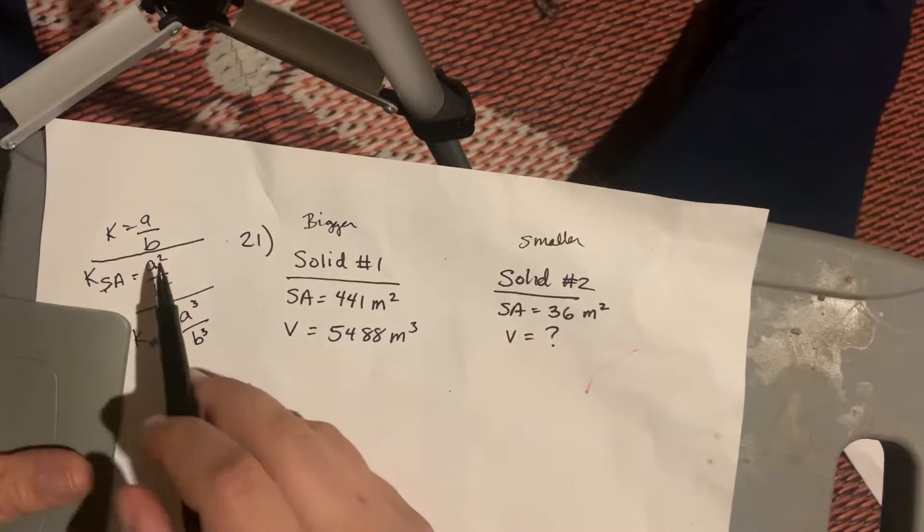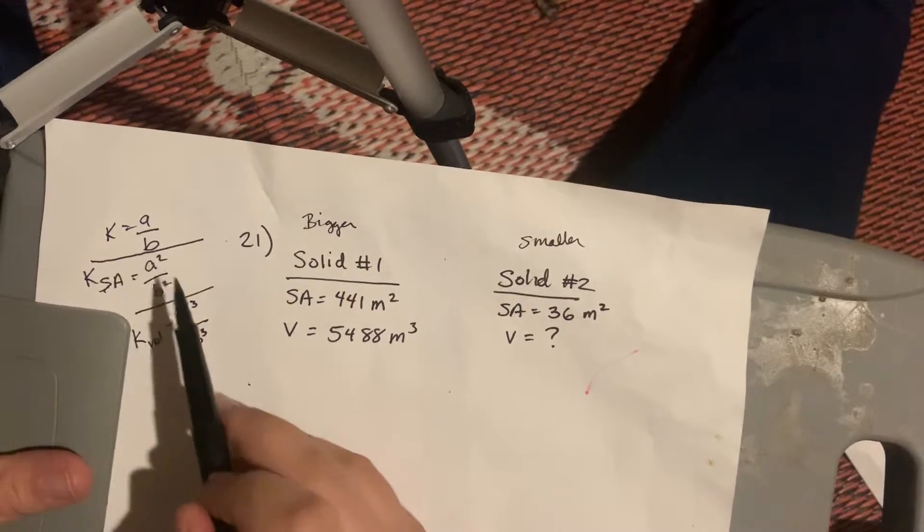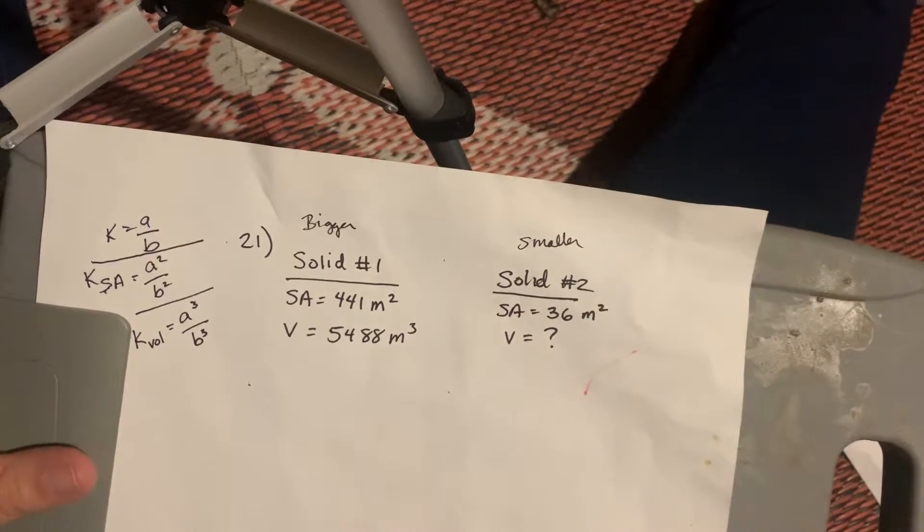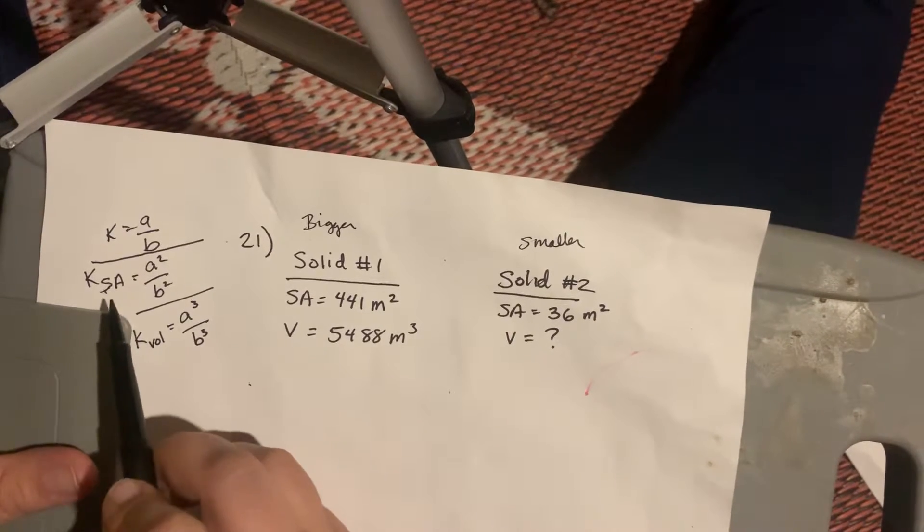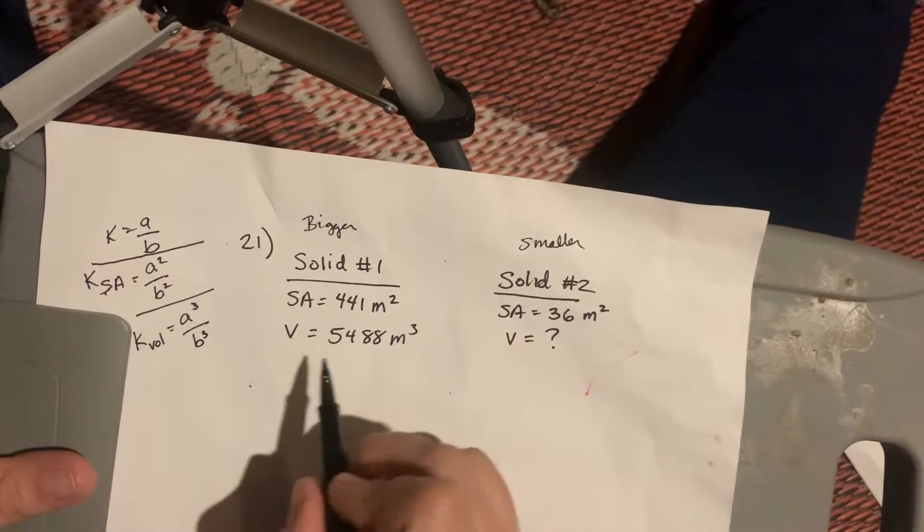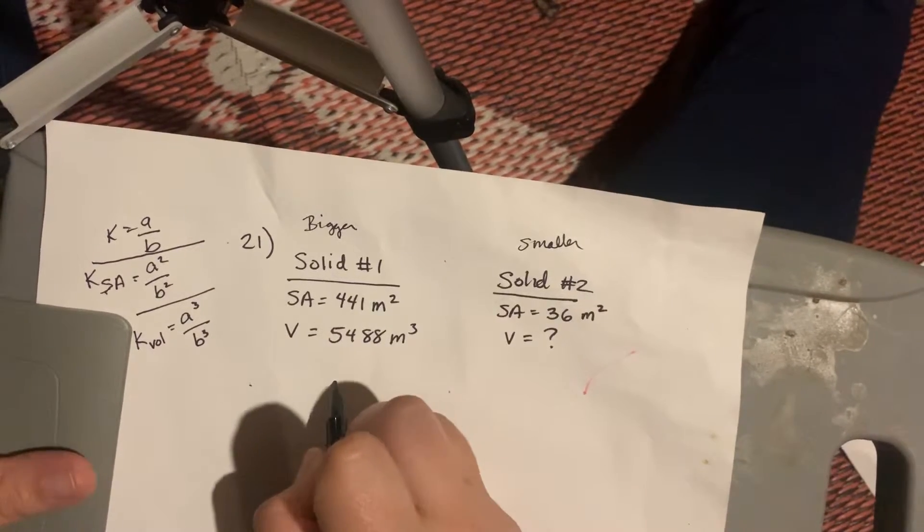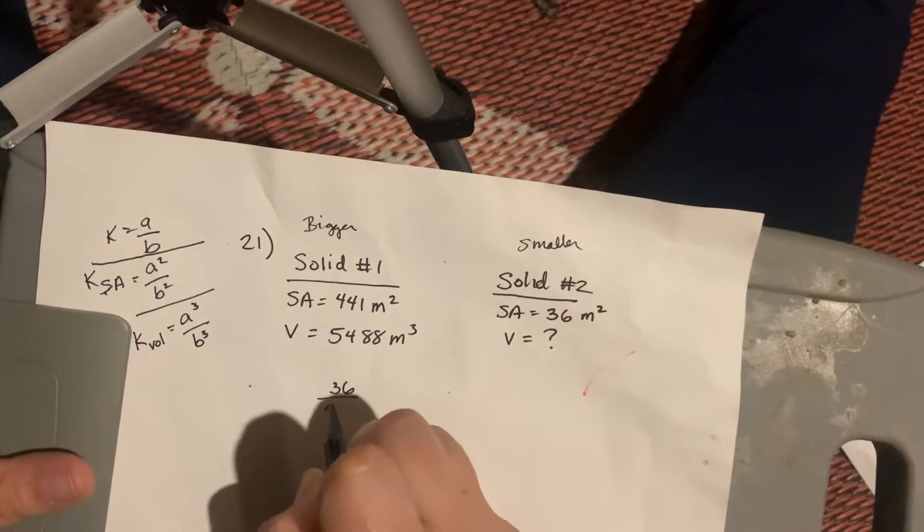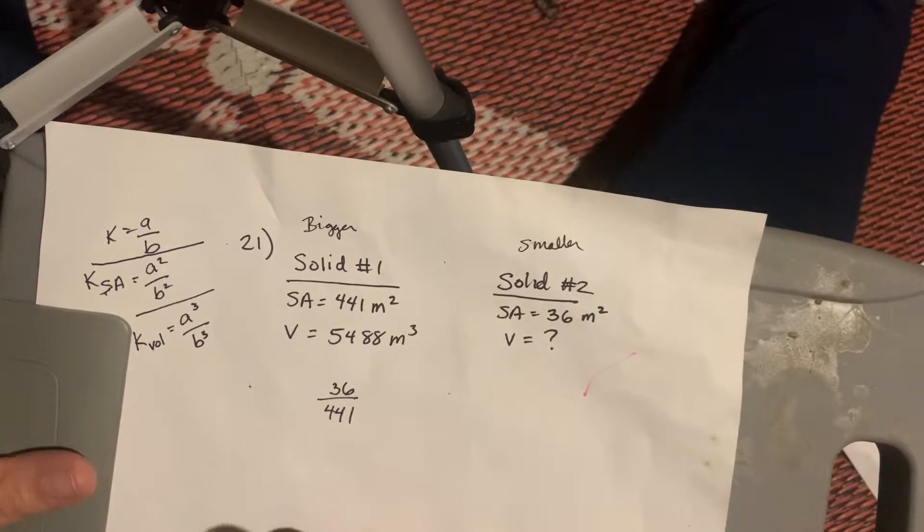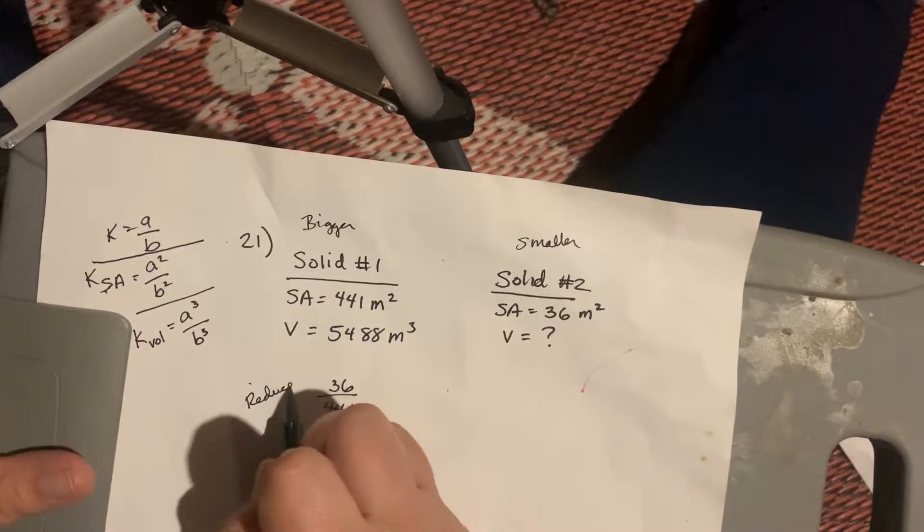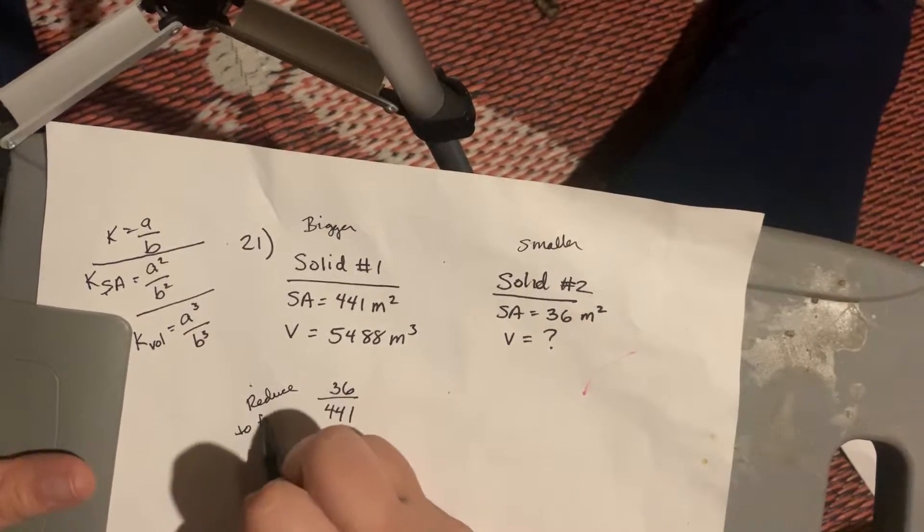And, what we need to do is figure out what the scale factor is, this A over B, for these. We're going to use the two surface areas that we have to do that. So, remember our surface area scale factor is A squared over B squared? Well, I'm going to put these two surface areas in a fraction. So, I'm just going to do smaller over larger. No particular reason. You could do it the other way. That would be okay. But, I need to reduce this to find the scale factor.